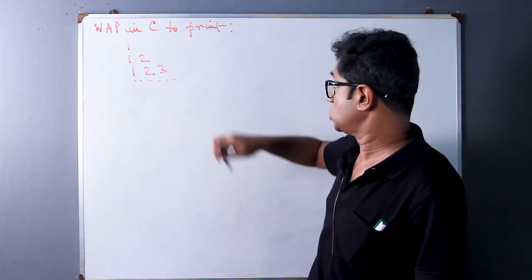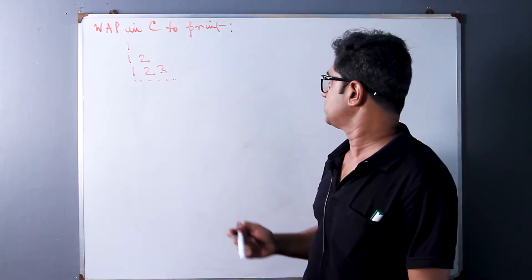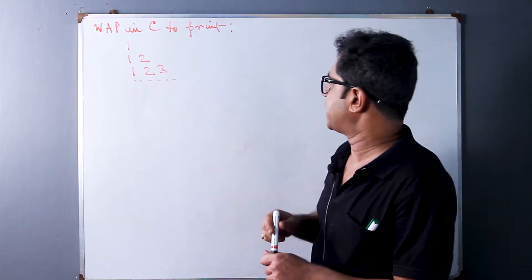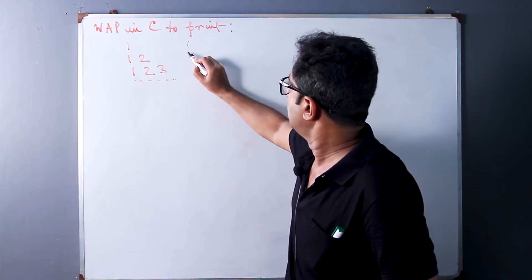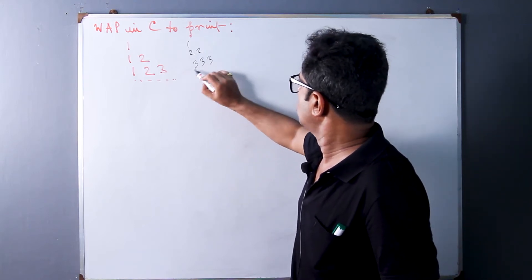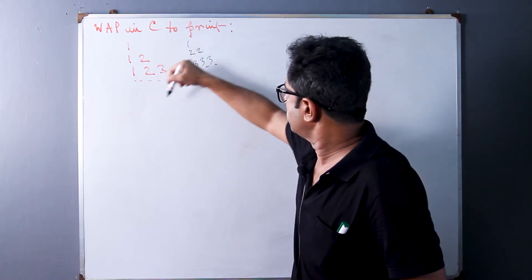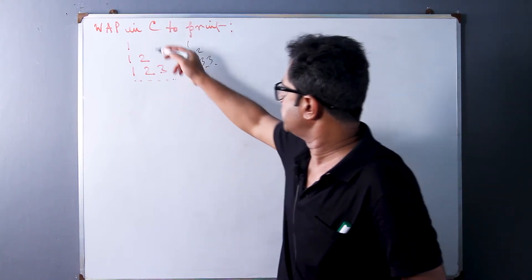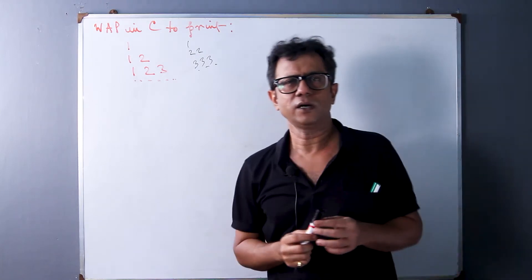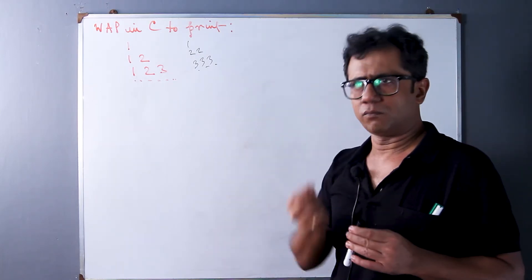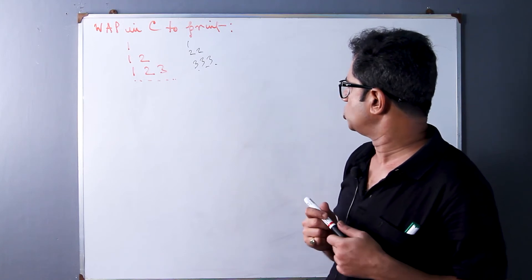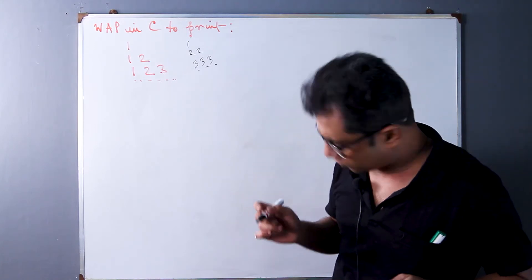As seen in the previous video, we printed a similar pattern that looked like: 1, 2 2, 3 3 3, and so on. This pattern is a variation of that one — it is a variant of that program, so more or less the program will be similar, barring one point which I am going to explain.